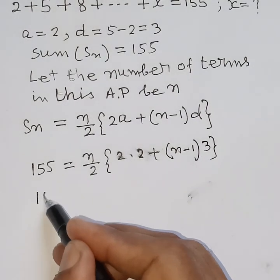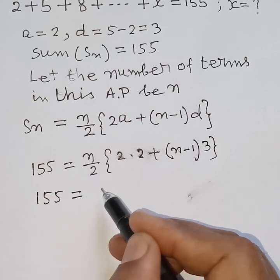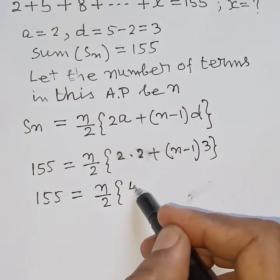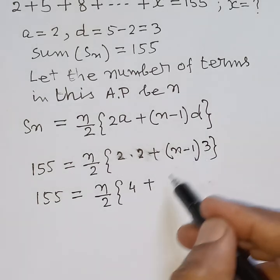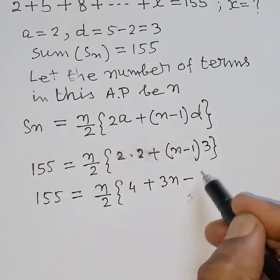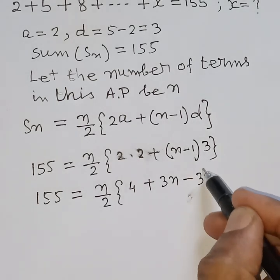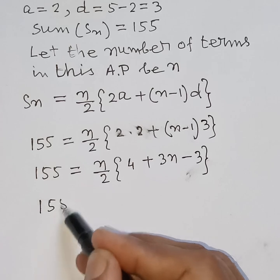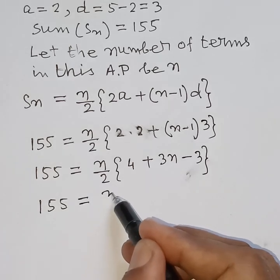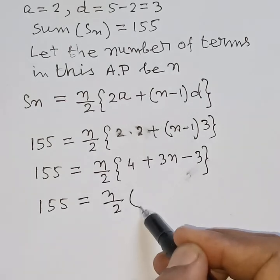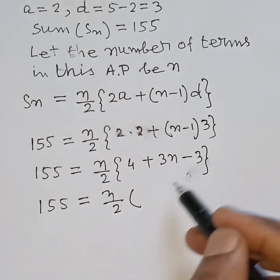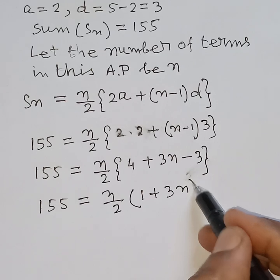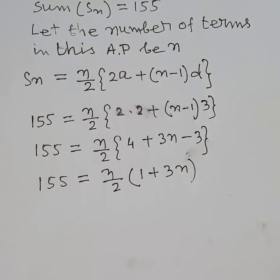So 155 is equal to n by 2 into 2 into 2 plus 3 into n minus 1, which simplifies to 155 is equal to n by 2 into 4 minus 3 plus 3n, giving 155 equals n by 2 into 1 plus 3n.